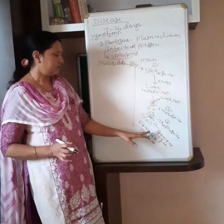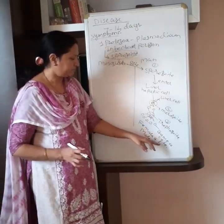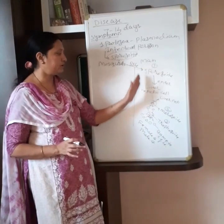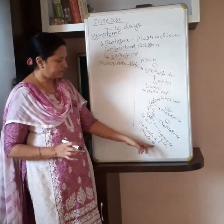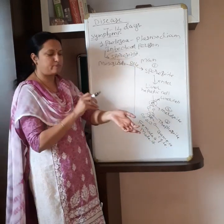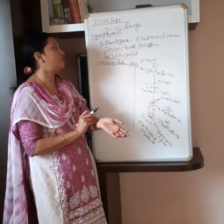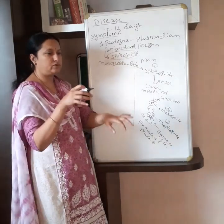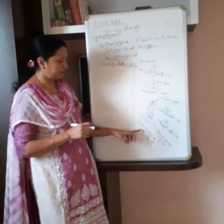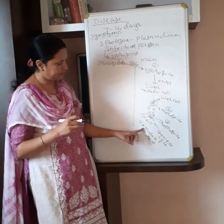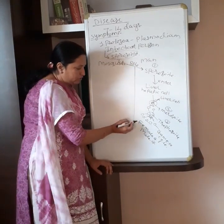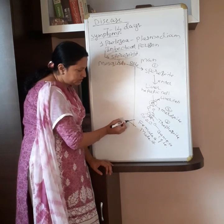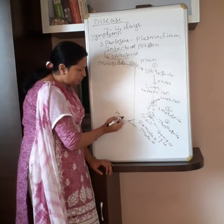The development of gametocytes does not take place in the human body. Many female and male gametocytes are present in the blood of the infected person. Now when another mosquito bites this infected person and sucks the blood, along with the blood, the male and female gametocytes enter into the mosquito.